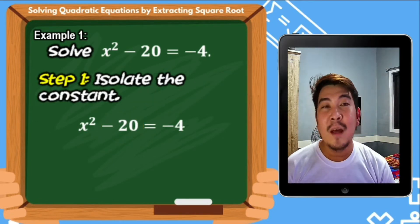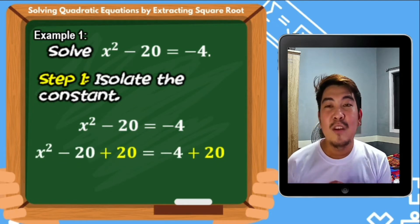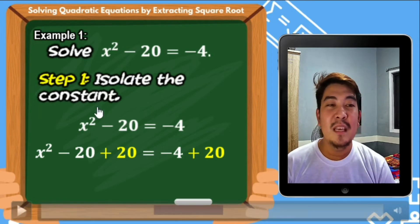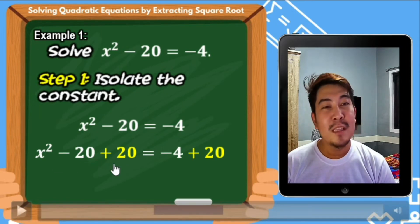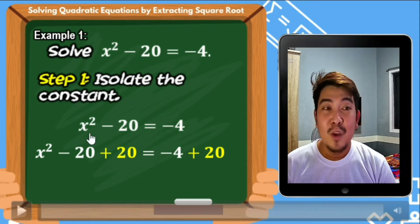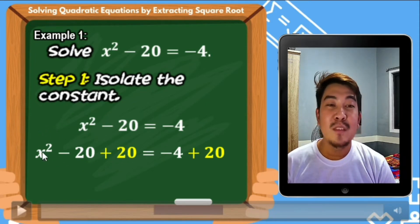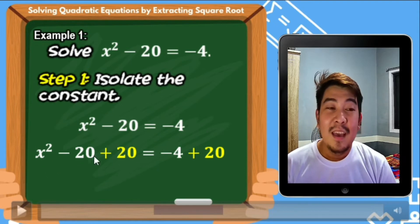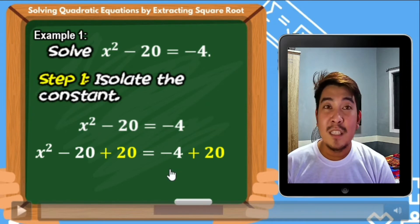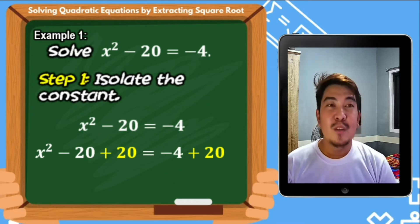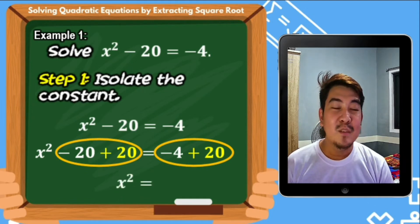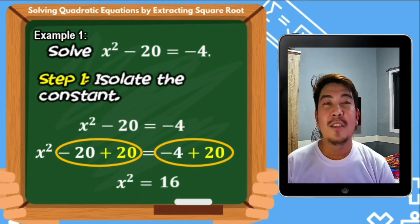So the result: x squared minus 20 plus 20 equals negative 4 plus 20. Notice that negative 20 plus 20 equals 0, so what remains on the left side is x squared. On the right side, negative 4 plus 20 gives us 16. So the new equation will be x squared equals 16.